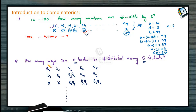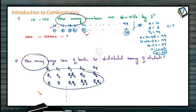Now, this is the most crucial part. We are not interested in knowing which specific numbers are divisible by 3 between 10 and 100, nor in knowing exactly which distribution of 6 books occurs. What we need is only how many different possibilities exist — we want the quantity, not the quality. How many numbers exist? 30 numbers. What those 30 are is a separate matter.